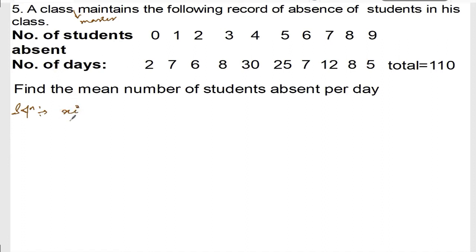Solution: We need to find the number of students absent and number of days. Number of students absent, let me write down as xi. This is 0, 1, 2, 3, 4, 5, 6, 7, 8, 9. And number of days, that is fi: 2, 7, 6, 8, 30, 25, 7, 12, 8, 5.